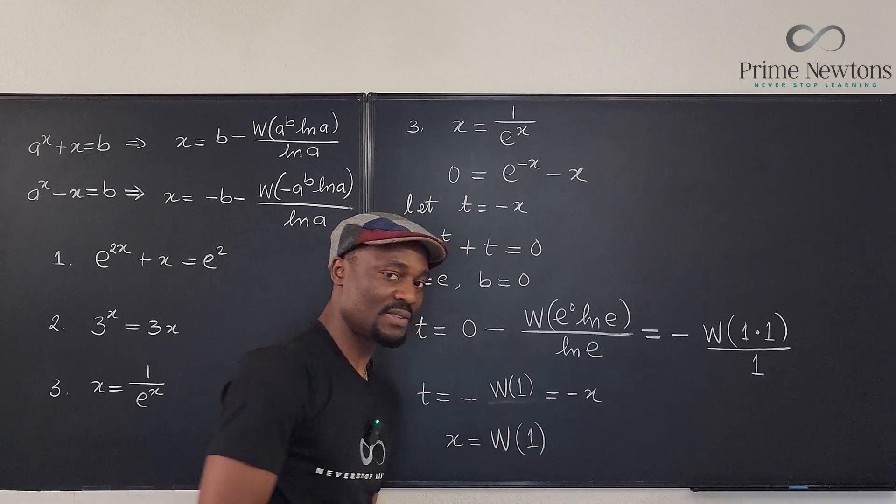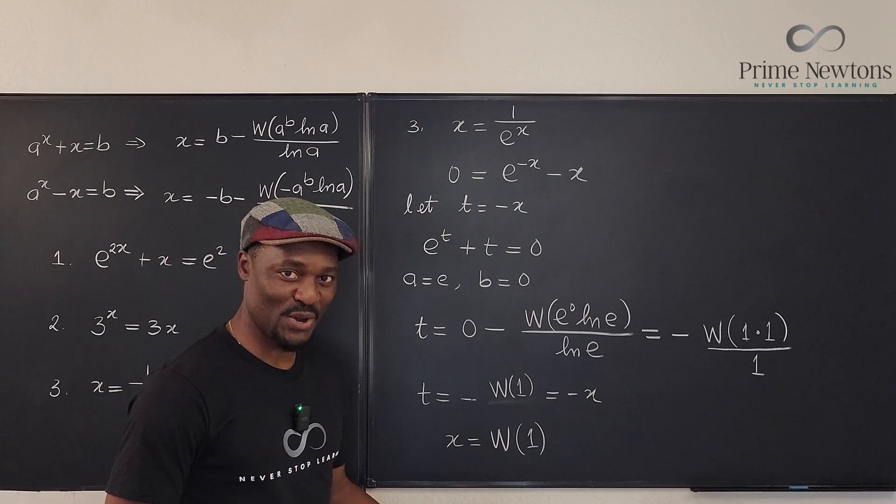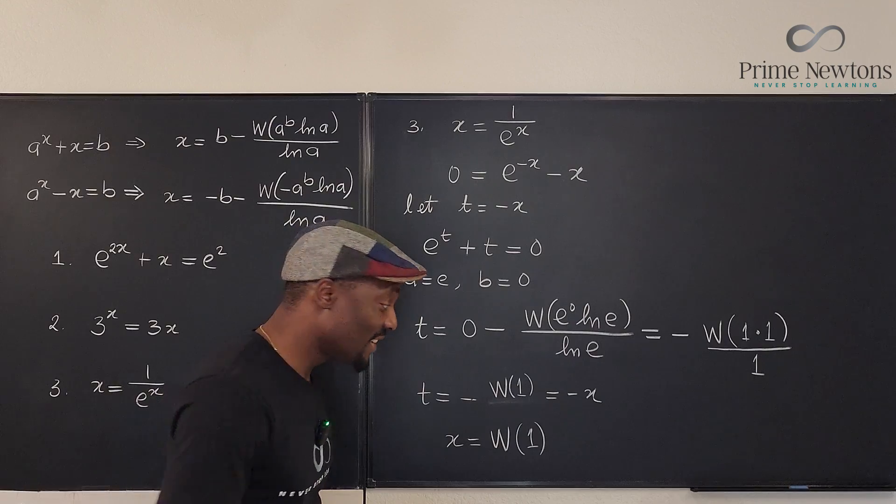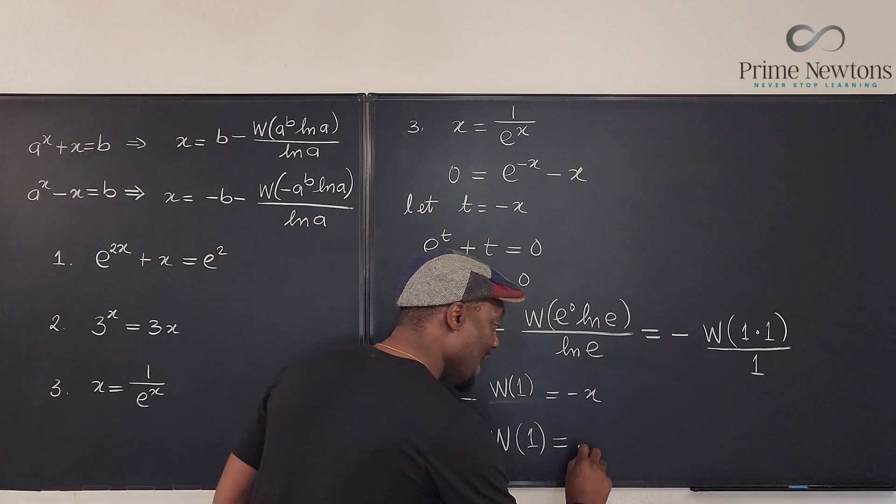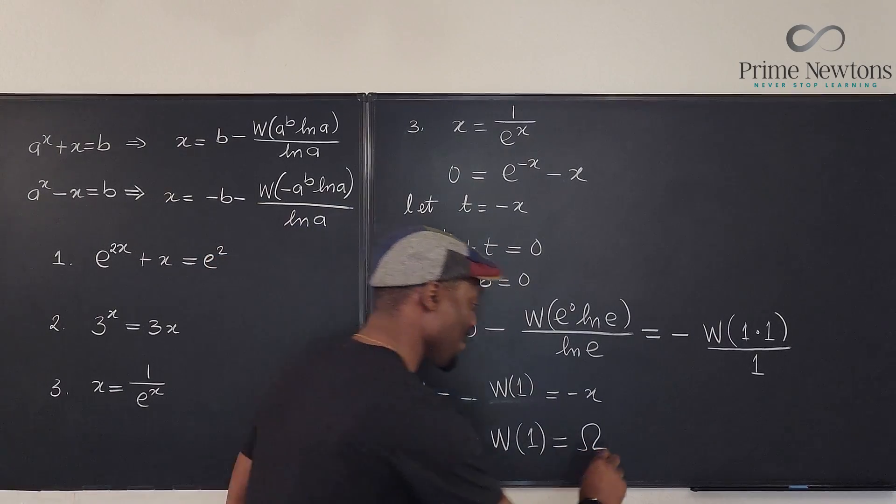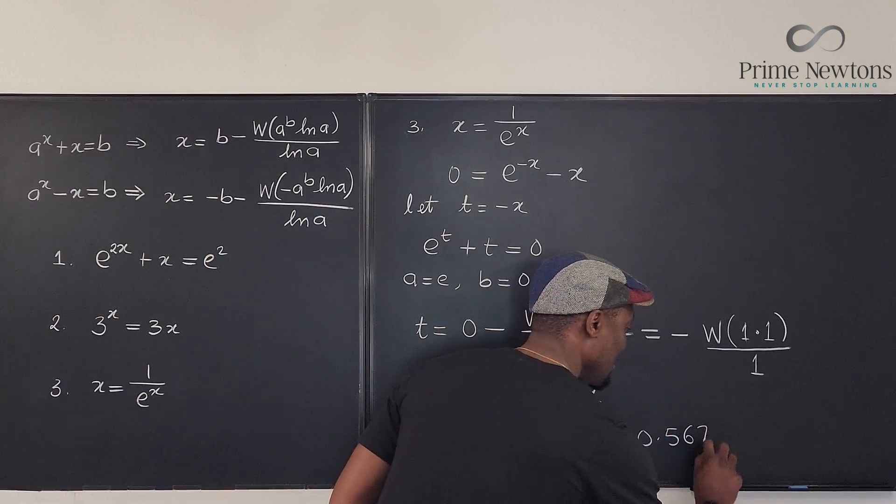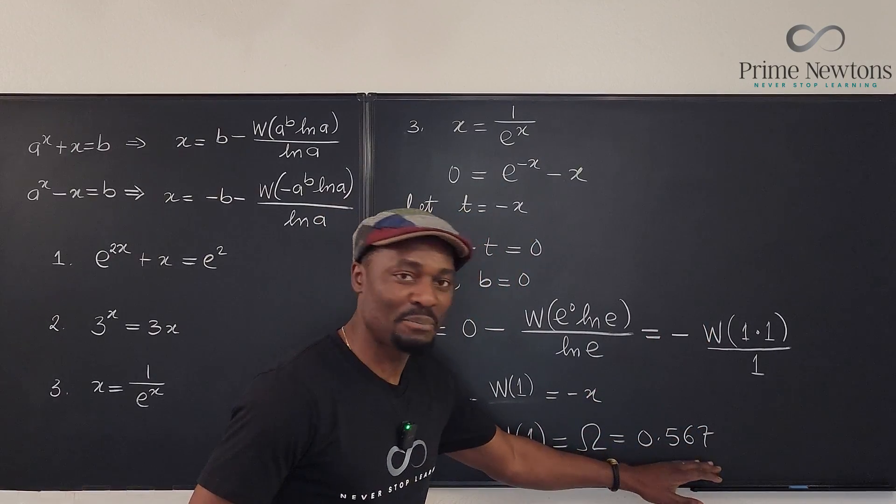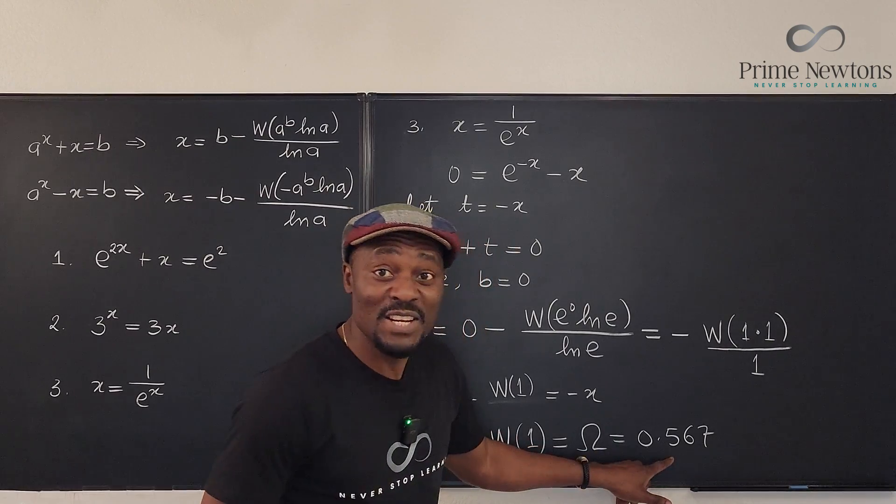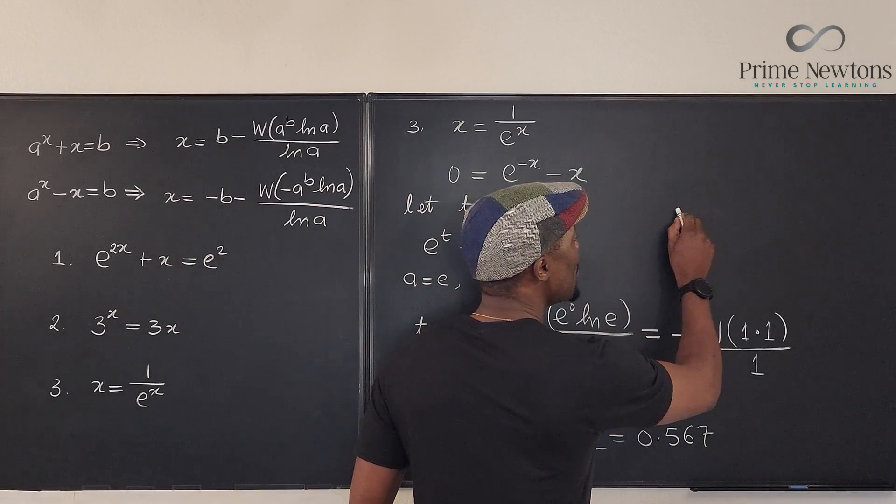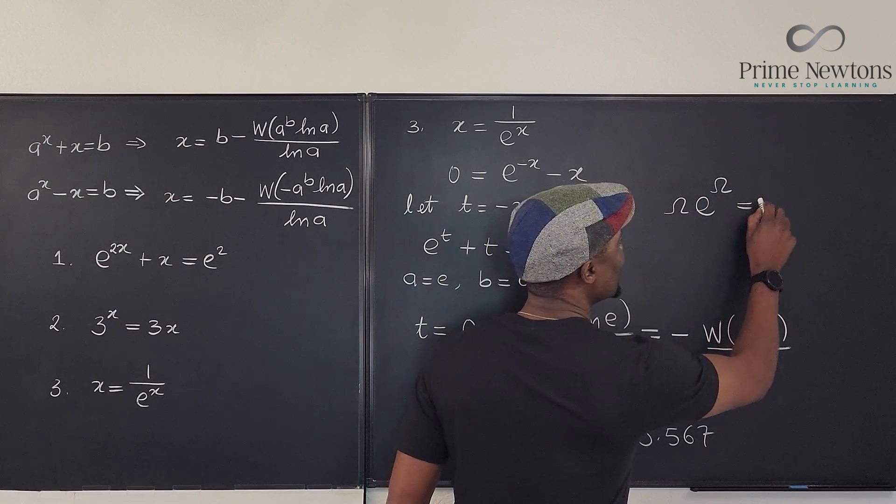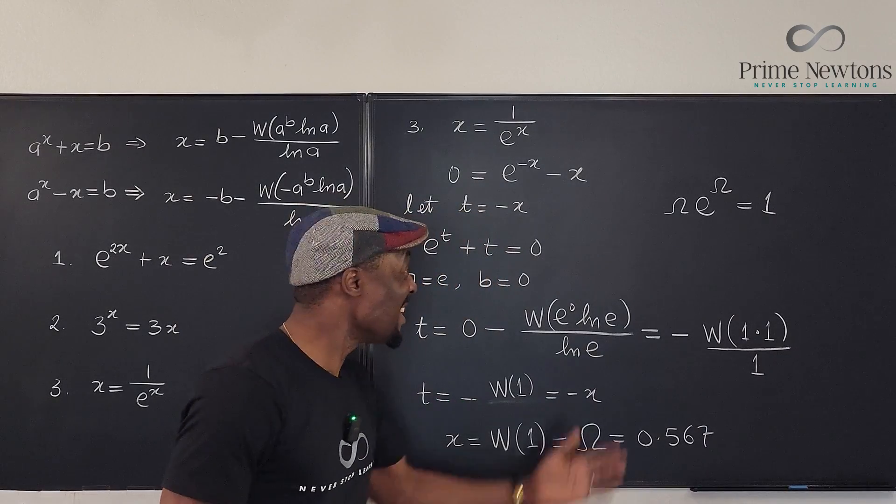Now, what is the w of one? This is what you call the omega constant because that is what you're gonna get. Have you seen this before? Yes. Actually, the value of this is 0.56714 and all that. But I'm gonna stop here just so you can remember. 0.567 is the omega constant because this is the number that you can use to multiply e raised to the omega and your answer is gonna be one. Isn't that beautiful?